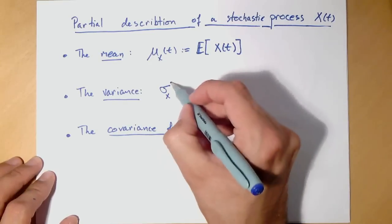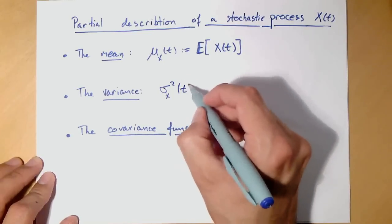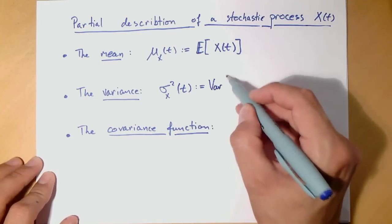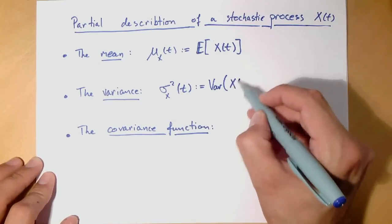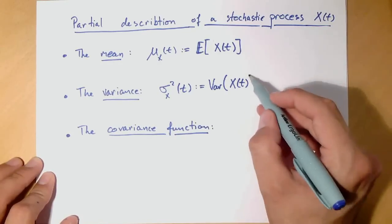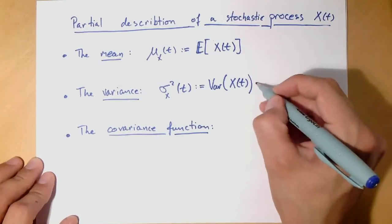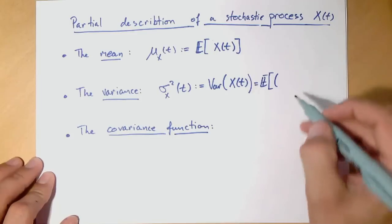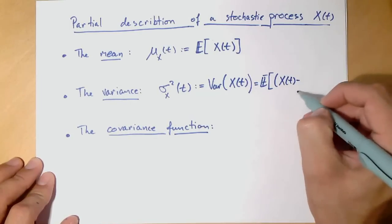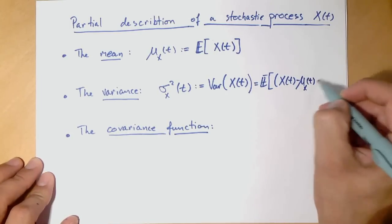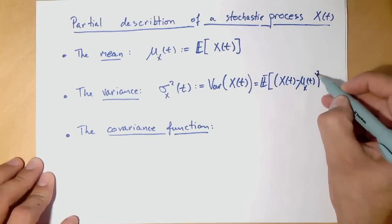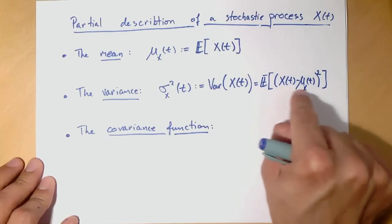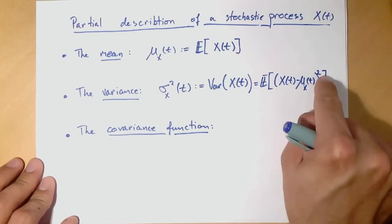You could also try to compute the variance. So we would typically denote that by σ²(t). This is also going to be time dependent. You could define that by taking the variance of the variable x(t) for all t's. And if you want, you can also write this as an expectation. You can write it out as x(t) minus its mean μ(t), and then you need to square it. So the interpretation of the variance is how much does x actually deviate from its mean. This is what's written here.